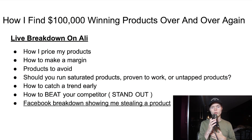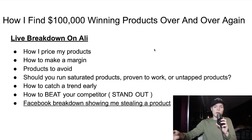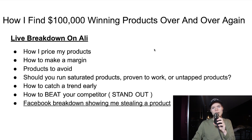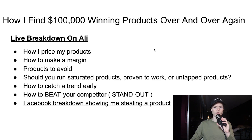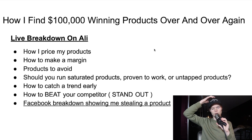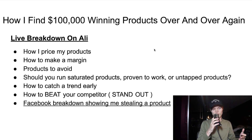Another strategy I use for product research is scrolling the Facebook feed. If you've been dropshipping for some time you'll recognize how a dropshipping product looks. The more you click, the more you get shown. If you see a product that looks good, note it down — say it has 100,000 views and 5,000 likes today. Check it the next day. If it has 300,000 views and 10,000 likes, the product just doubled, most likely meaning someone is scaling it. That's your time to get on it. I usually get on a product when about three people are selling it.